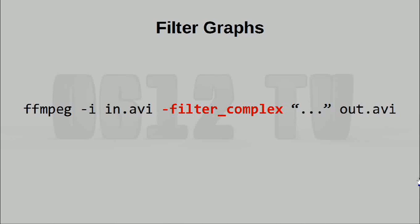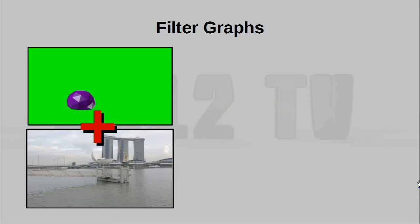I should mention at this point that if you're going to be using a complex filter graph — one that isn't just a straight line — you are going to have to use the filter_complex command switch, and not any of the others we've seen. Now instead of doing the extremely complex example we've looked at, let's do something a little bit simpler and hopefully a little bit more fun.